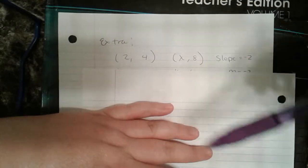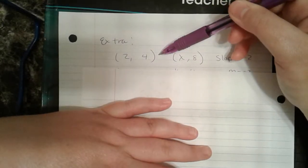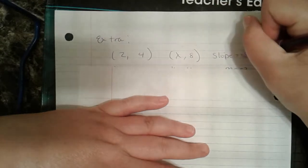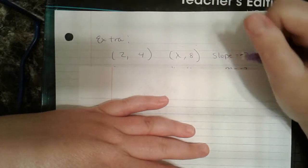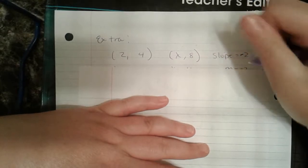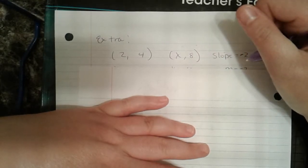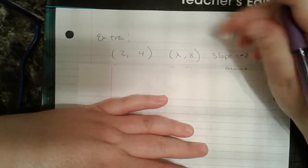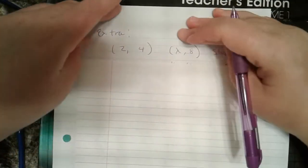So looking at this, we have our order pair of (2, 4), (x, 8), and slope of negative 2. So go ahead and pause the video and look at the previous notes that you just took and use those steps to solve this. Okay. So assuming you paused your video and you actually tried it out, let's take a look at this.